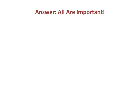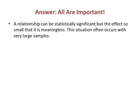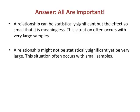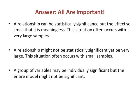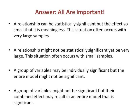Here are some real scenarios that I have seen over the course of many years of data analysis. A relationship can be statistically significant, but the effect so small that it is meaningless — this situation often occurs with very large samples. A relationship might not be statistically significant, yet be very large — this situation often occurs with small samples. A group of variables may be individually significant, but the entire model might not explain much. A group of variables might not be significant, but their combined effect may result in an entire model that is significant.